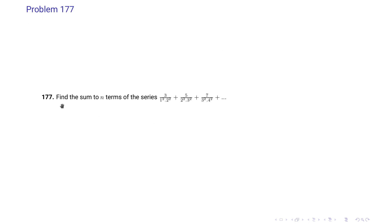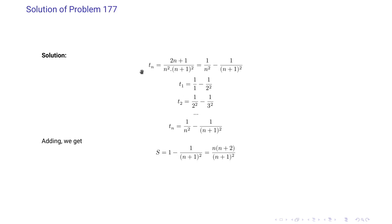Problem 177: Find the sum to n terms of 3/(1²·2²) + 5/(2²·3²) + 7/(3²·4²) + … The nth term is (2n+1)/(n²(n+1)²) = 1/n² − 1/(n+1)². Substituting n = 1, 2, 3, … gives a telescoping series where 1/2², 1/3², … cancel, leaving S = n(n+2)/(n+1)².